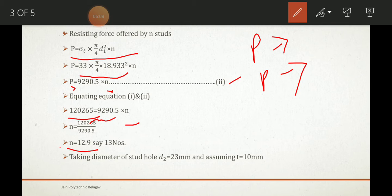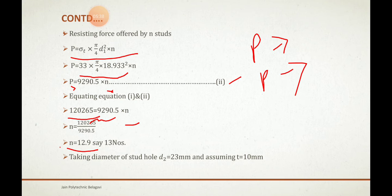Next, we take the diameter of the stud hole as 23 mm — always one mm greater than the stud diameter of 22 mm. We also assume a thickness of 10 mm, which can be taken between 8 to 10 mm.